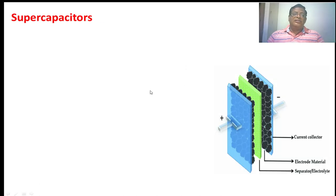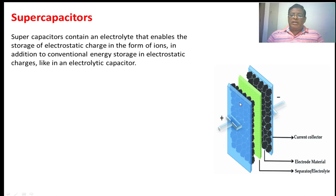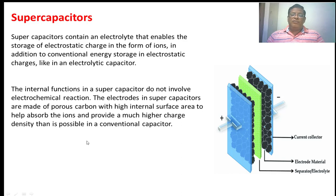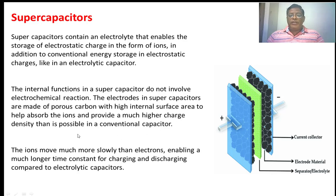Supercapacitors are derived from the conventional capacitor form. They consist of two conducting plates, an electrolyte, and a separator. The electrolyte enables the storage of electrostatic charge in the form of ions, in addition to conventional energy stored as electrostatic charge, like in an electrolytic capacitor. There is a current collector, electrode material, and separator. The internal function in a supercapacitor does not involve the electrochemical reaction as seen in a battery. The electrodes are made up of porous carbon with high internal surface area to absorb ions and provide much higher charge energy. The ions move more slowly than electrons, enabling a much longer time constant for both charging and discharging the supercapacitor.